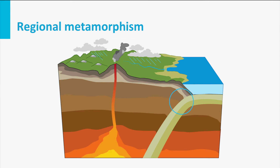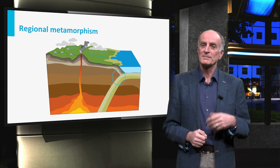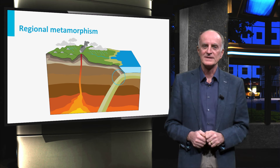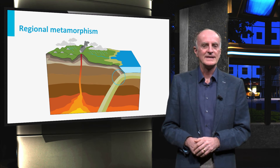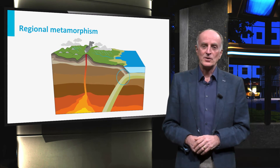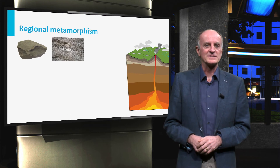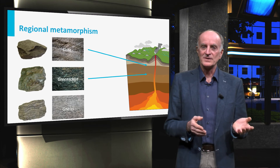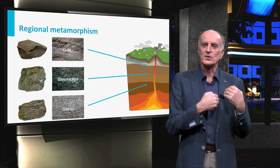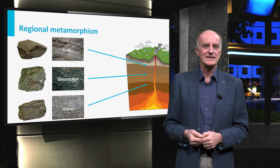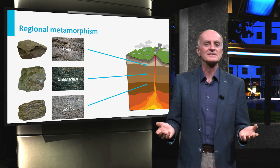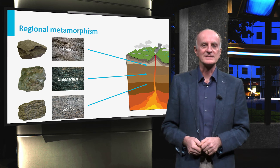Regional metamorphism is found in the areas where two lithospheric plates collide with each other, there where mountains form. This is the most common form of metamorphism. A sand or a shale brought to higher depths will first become a green schist, will then acquire a coarser size and eventually become a gneiss. At higher temperatures, it might even start melting, creating migmatites.